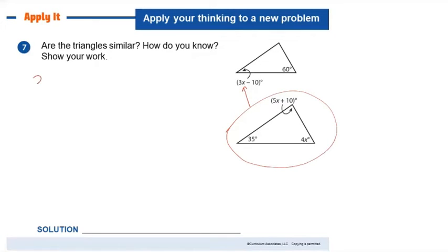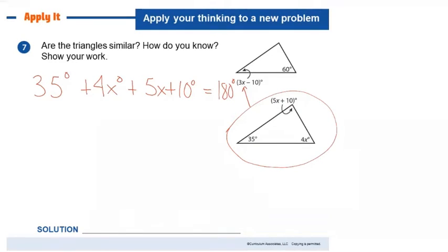I need to find all the angle measurements in the bottom triangle using the fact that they add up to 180 degrees: 35 plus 4X plus 5X plus 10 equals 180. Based on parent-teacher conferences, some of you get overwhelmed when more than one thing is added together. It may be easier not to put degree symbols on everything while you work, but remember these are all degrees.